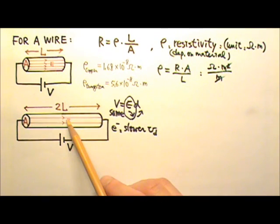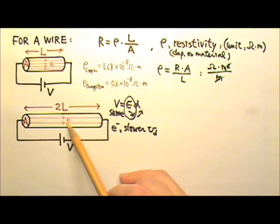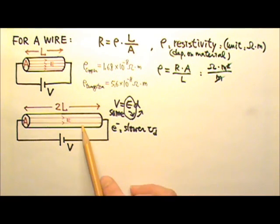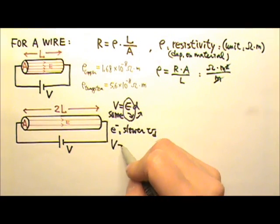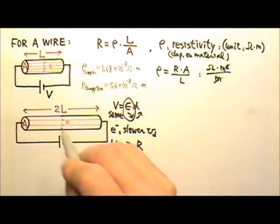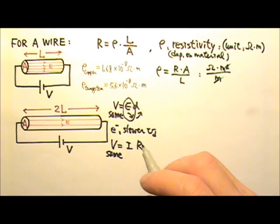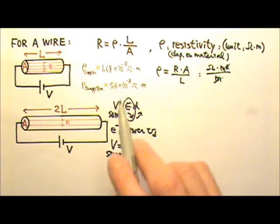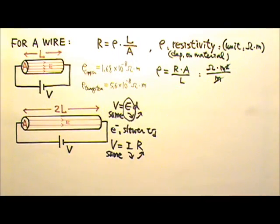The two wires have the same cross-sectional area, so there is the same number of free electrons at a cross-section. The same number of electrons flowing at a slower speed means the current in the longer wire is less. By V equals IR, with the same voltage, the longer wire has less current and therefore larger resistance.